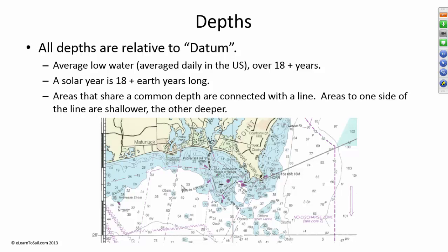The solar year is 18 and a half earth years long. So in other words, the position of the stars, the sun, the moon, the planets to each other all repeat themselves about once every 18 and a half earth years. So when we talk about datum, we're talking about the average low water in 18 and a half years.